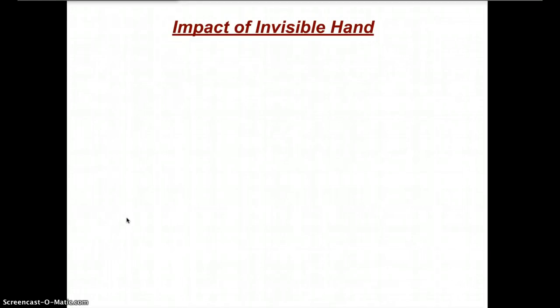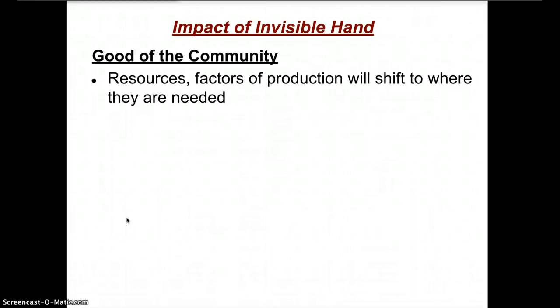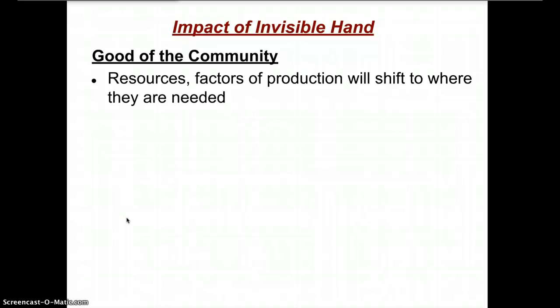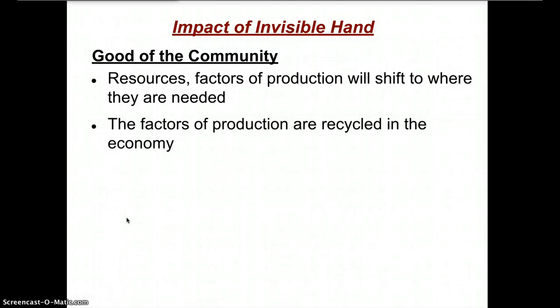The next concept is the impact of the invisible hand, specifically something called the good of the community. This is a simple yet often confusing concept. In our economic system, because of how it's set up, the factors of production — land, labor, and capital — will shift. They will move to where society needs them most, and they will do this all by themselves without any motivation from a specific individual or group. The factors of production are recycled: they continually move in the economy to where consumers and producers want them, and they're never just sitting idly collecting dust. This means we have a very efficient economic system.